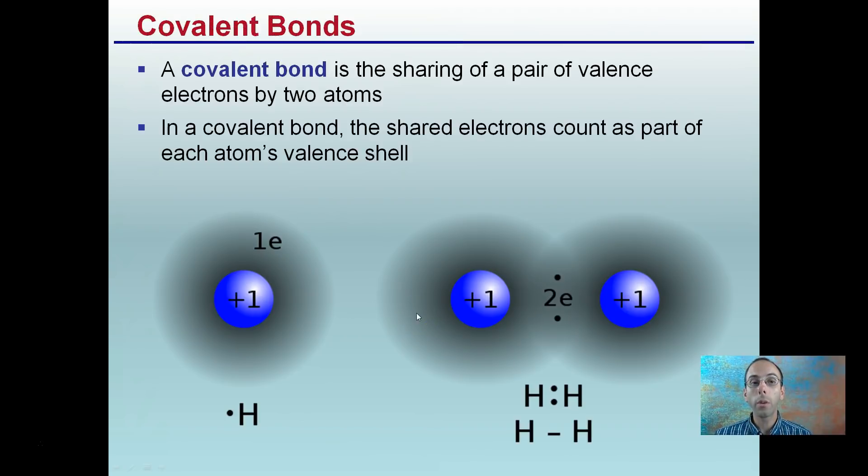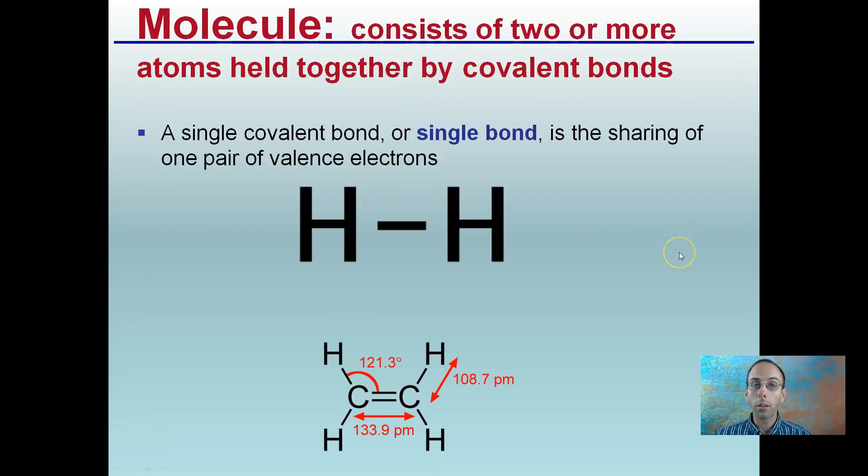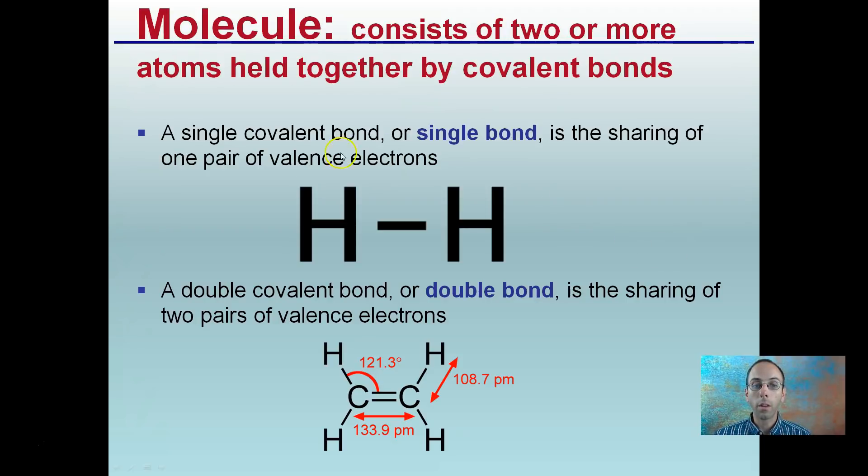The other form that I mentioned was called covalent bonds. This is the sharing of a pair of valence electrons by two atoms. In a covalent bond, the shared electrons count as part of each atom's valence shell. They're being shared, not transferred, shared, so it can count in both of these particular hydrogen atoms. How does that look? We're looking at our molecules now. So a molecule consists of two or more atoms held together by a covalent bond.